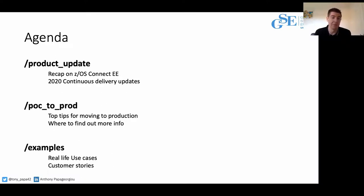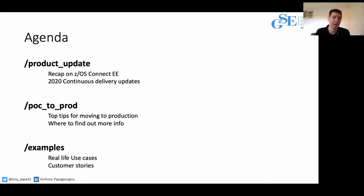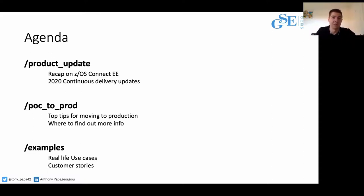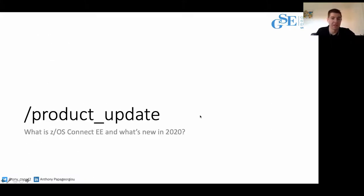Then an update on our new capabilities delivered through 2020. We'll go on to some tips and pointers on a lot of good information you can use when moving from your first project or first API to scaling it out to production. And finally, we'll finish with some use cases and customer stories — how they've been using the product — and some tips on how to articulate the benefits to your business.